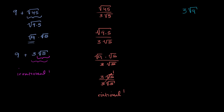Now let's do this last expression: 3 times the principal root of 9. The principal root of 9 is 3. So this is 3 times 3, which equals 9. And we've already established that 9 can clearly be expressed as the ratio of two integers — 9 over 1, 27 over 3, 45 over 5 — all different ways of expressing 9. So this is rational.